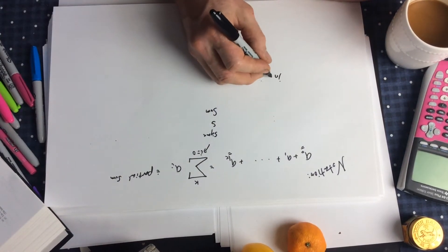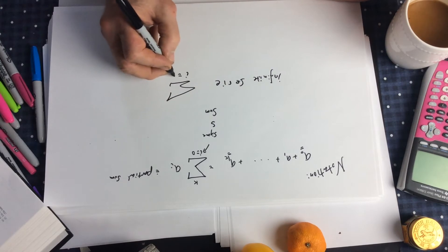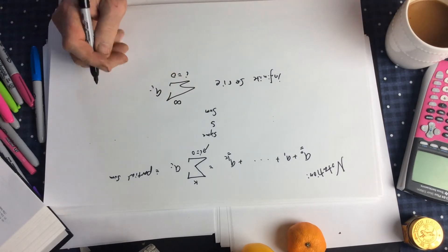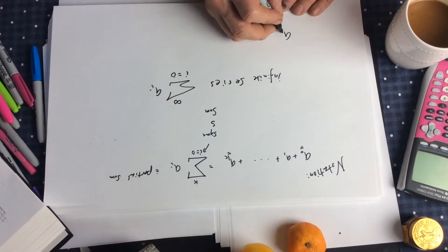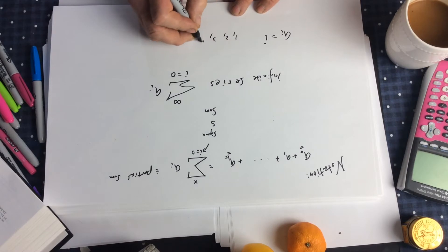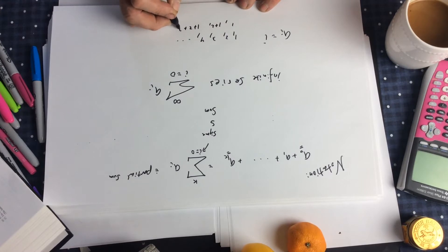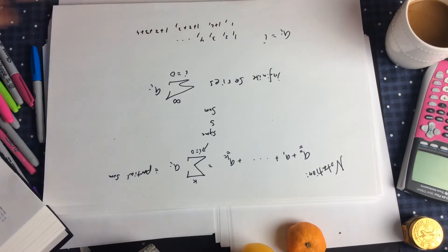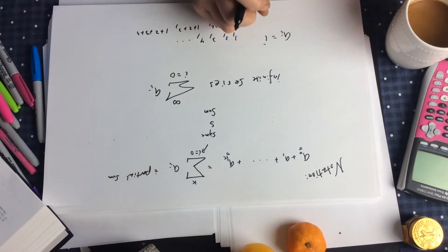This is called the partial sum. We call it a partial sum because it's only the first so many entries of a series that might be infinitely long. The problem with an infinite series is we don't know if they add up. Think of the sequence a_i equals i — the counting sequence: one, two, three, four forever. If we add that up, one plus two plus three plus four — this is getting bigger and bigger. So we don't know if this is going to add up.